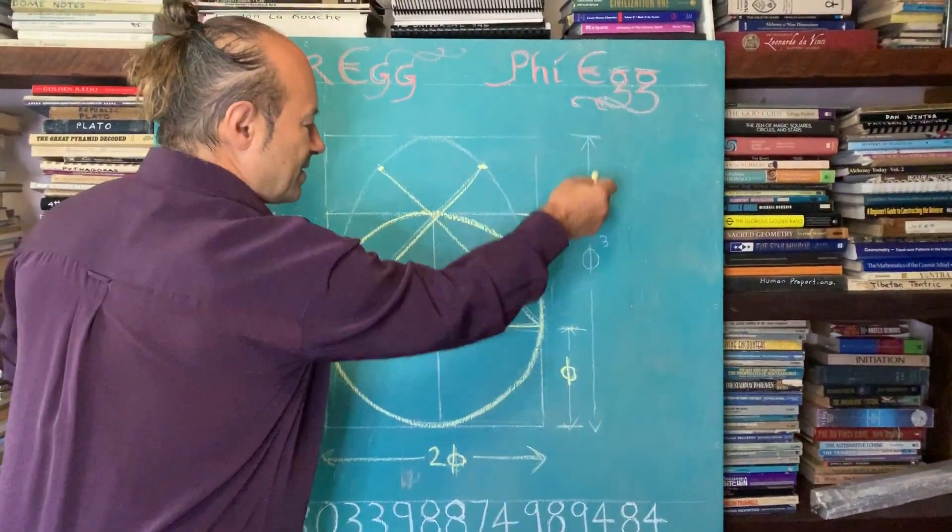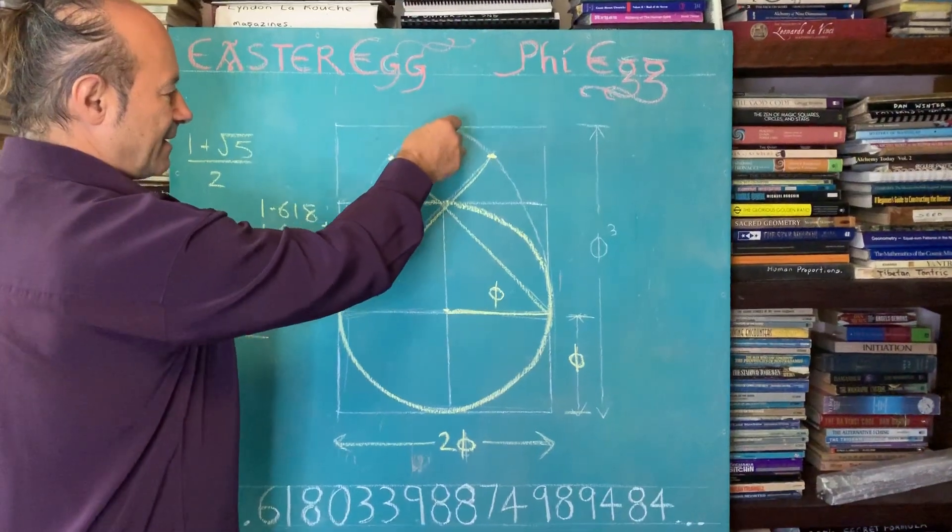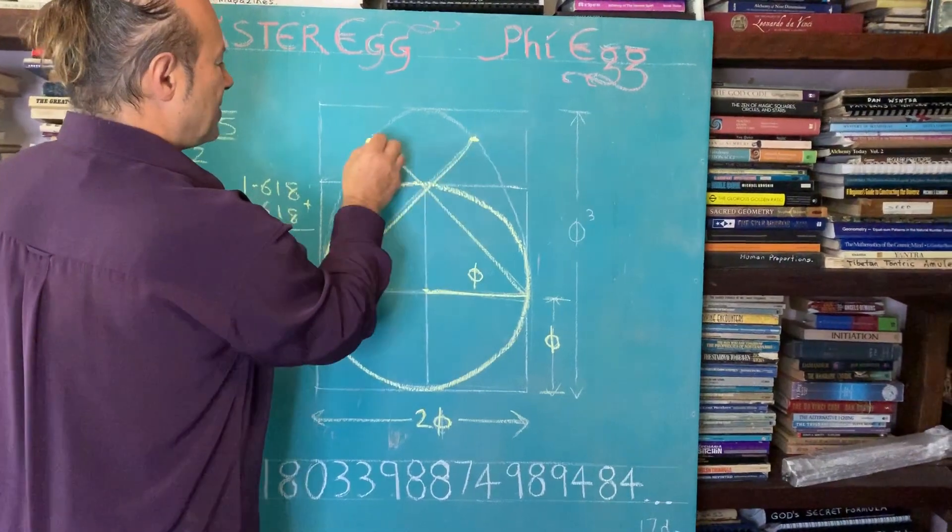What we want to establish is what's the height, the vertical height of our Easter egg. So by applying 2 Phi, 2 Phi, I've got two critical points.